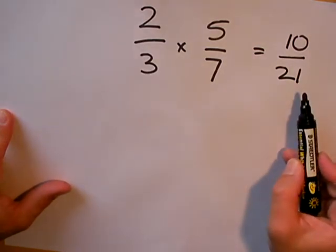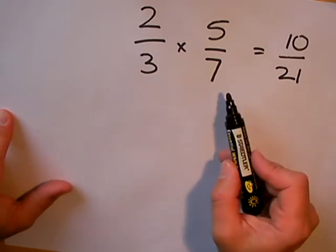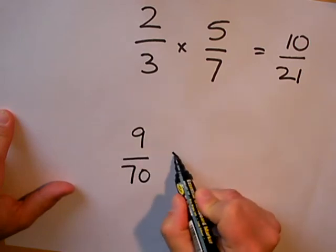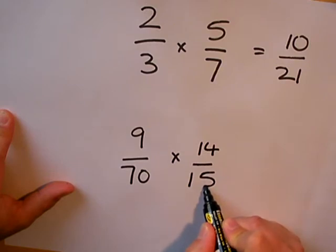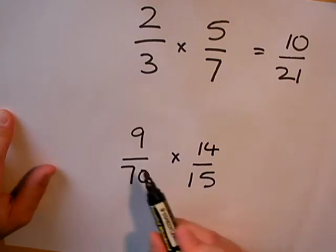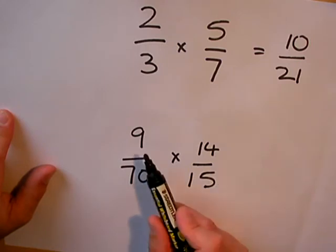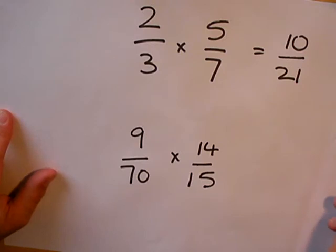Now we might get more complicated fractions to multiply together, or we might get fractions with larger numbers. For example, 9/70 × 14/15. In this case we just multiply the top numbers and multiply the bottom numbers, but when we multiply 9 and 14 and 70 and 15 we're going to end up with some rather large numbers. So if we can, we can try and cancel.